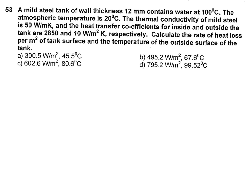Next: a mild steel tank of wall thickness 12 mm contains water at 100°C. The atmospheric temperature is 20°C. The thermal conductivity of mild steel is 50 W/m·K, and the heat transfer coefficients for inside and outside the tank are 2850 and 10 W/m²·K respectively. Calculate the rate of heat loss per m² of tank surface.